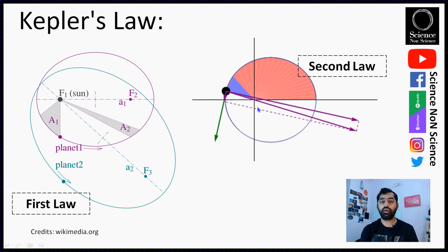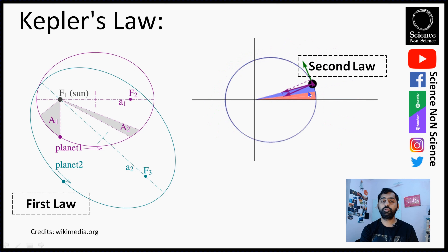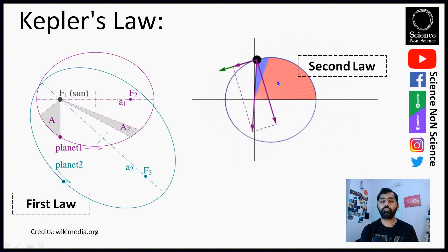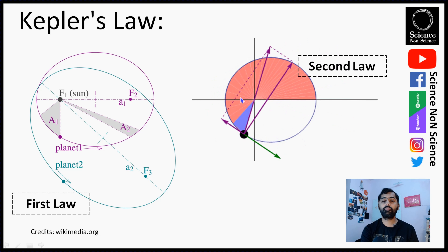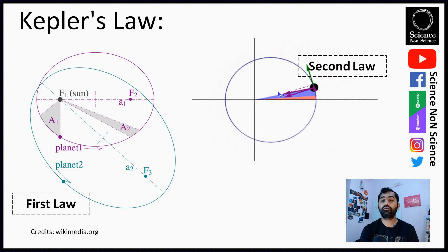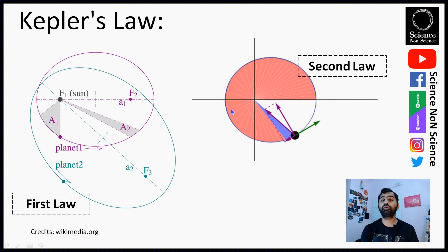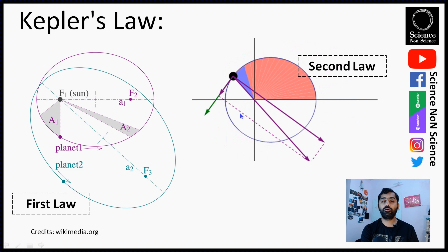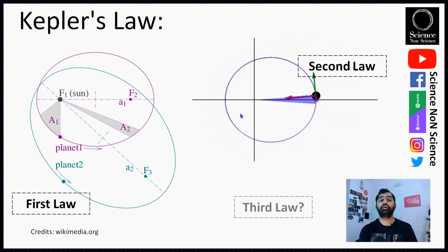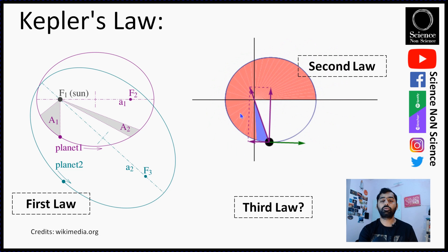The second law states that the radius vector joining the planet and the Sun sweeps equal areas in equal intervals of time. As you can see, the blue-colored area at every delta-t — shown by these sectors — has the same amount of area. This indicates that when the planet is further away from the Sun it moves slowly, whereas when it comes close to the focus it moves faster, so as to sweep equal areas.